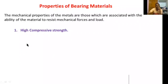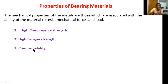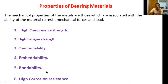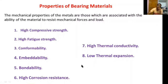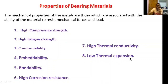The bearing material should have: first, high compressive strength; second, high fatigue strength; third, good conformability; fourth, good embeddability; fifth, good bondability; sixth, high corrosion resistance; seventh, high thermal conductivity; and eighth, low thermal expansion. I will explain each of these eight properties in this session.